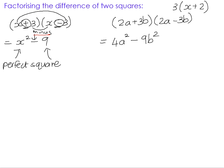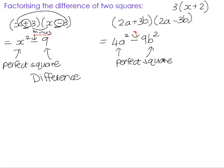The same is true of 4a squared minus 9b squared. 4a squared is also a perfect square, and so is 9b squared, and the sign in between them is also a negative sign. So both of these expressions are what we could describe as the difference of two squares — it's a binomial expression where both terms are perfect squares. We call the product that comes from a sum and difference bracket the difference of two squares.